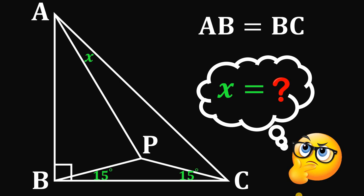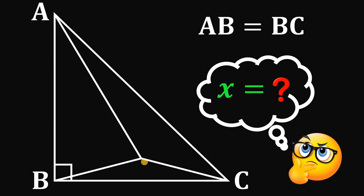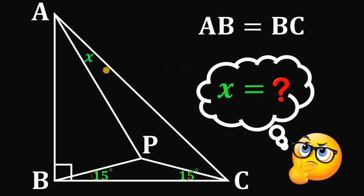For today's video, we will answer a geometry challenge given by one of our followers. The question goes like this: given this right triangle with vertices A, B, and C, let's draw a segment inside the right triangle and call this point P. This angle must equal 15 degrees, this angle also equals 15 degrees, and this angle is X degrees. It is also given that AB equals BC. The question is: what is the value of angle X?